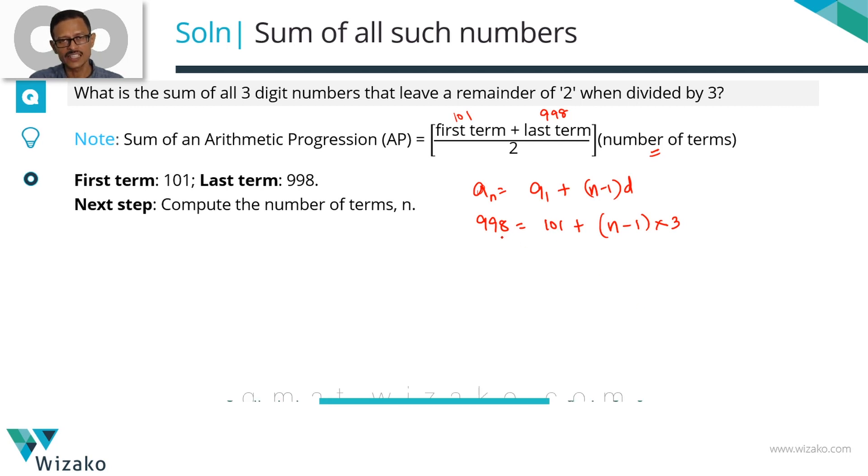Take 101 to the left-hand side. 998 minus 101 is 897. 897 equals n minus 1 times 3. Divide both sides by 3. The left-hand side will leave us with 299 when you divide 897 by 3. This equals n minus 1. If n minus 1 equals 299, n equals 300.